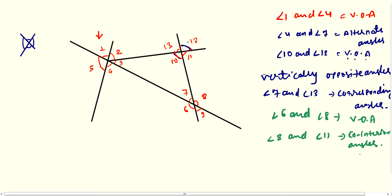You can also write allied angles, as given in your books. Next is angle 7 and angle 9 — again vertically opposite angles. Then angle 4 and angle 5: you have angle 4 here and angle 5 here with a common arm, and they make a straight angle of 180 degrees, so angle 4 and angle 5 are adjacent angles.